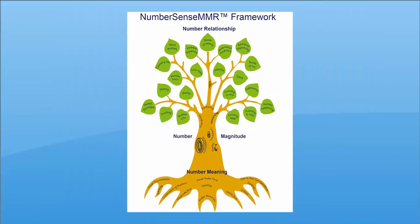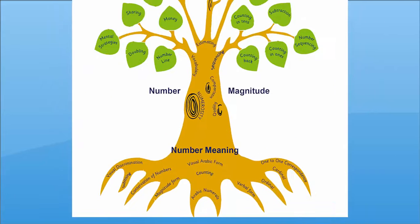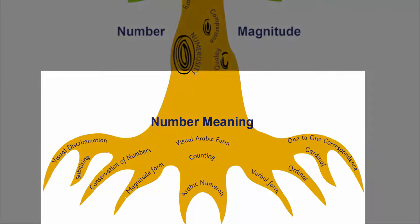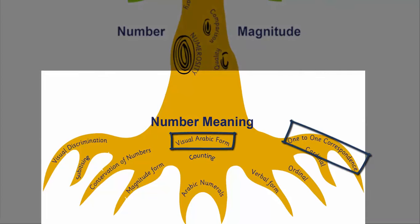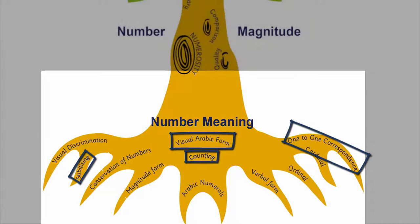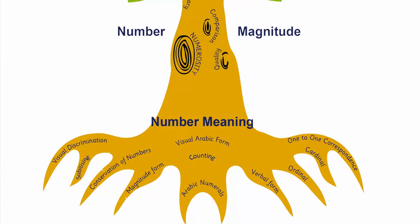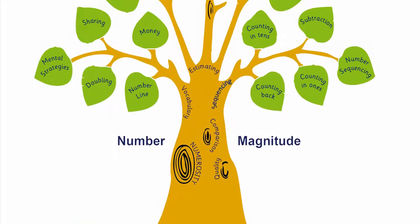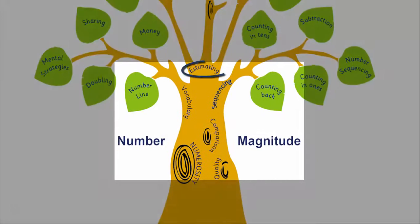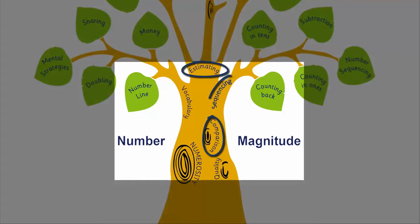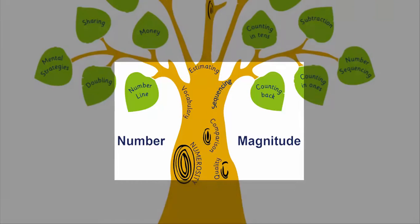Number Meaning is an essential stage of Number Development, covering concepts including one-to-one correspondence, Arabic numerals, subitizing, and counting. Number Magnitude covers topics such as estimation, comparison, and sequencing, and aims to help the child gain an appreciation of the value of numbers.